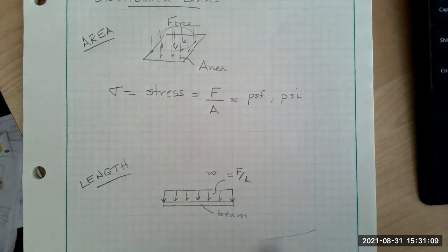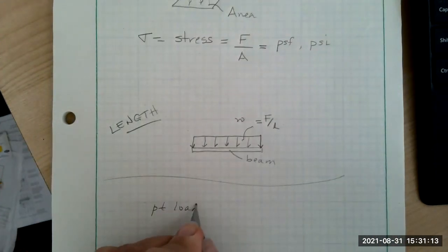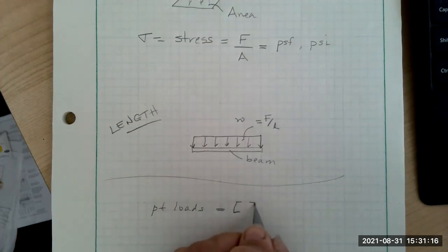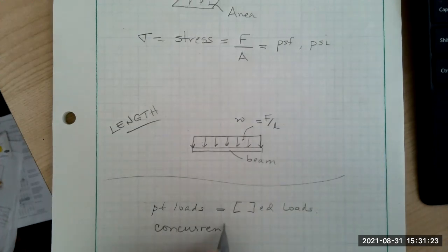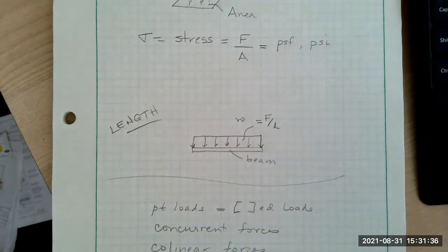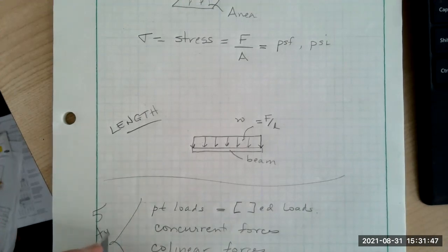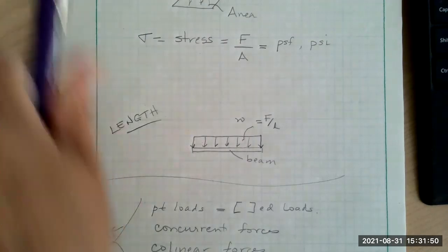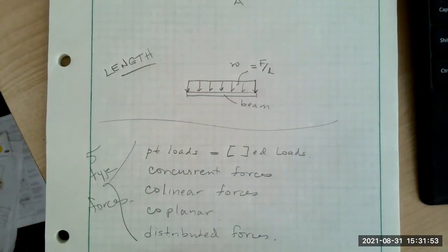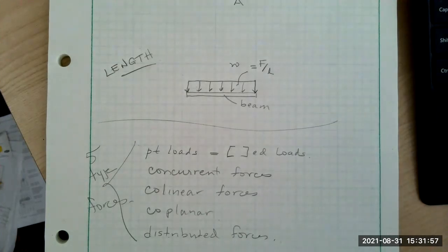So just to do a summary now, we have point loads, which are the same as concentrated loads. We have concurrent forces or loads, we have collinear forces, we have coplanar forces, and then the last one we're looking at is distributed. So these are the five different types of forces that we're going to be seeing in our statics class.